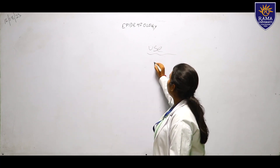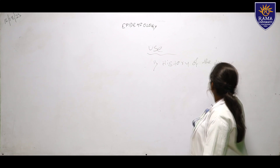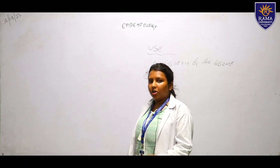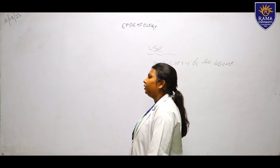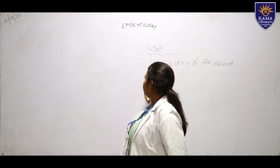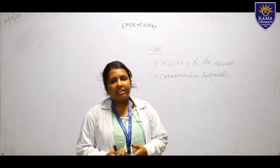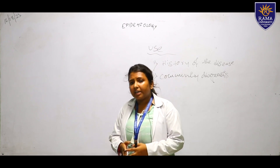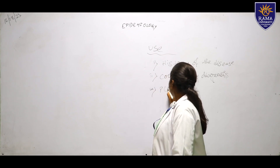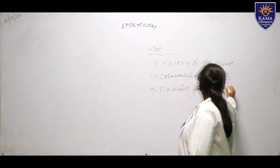Through the study of disease condition, that is, through epidemiology, we can know the proper history of the disease. The second use is community diagnosis — identifying in which community the disease is more prevalent. The third use is planning and evaluation.